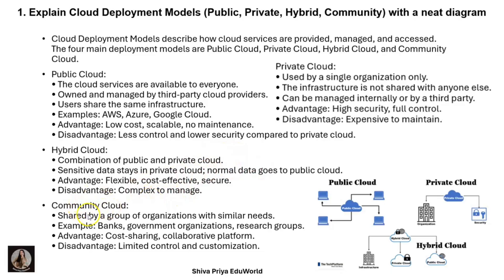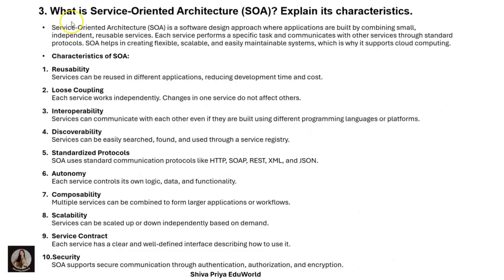Community cloud is shared by a group of organizations with similar needs. For example, banks, government organizations, and research groups. Advantages are cost sharing and a collaborative platform. Disadvantages are limited control and customization. In a diagram: public cloud — anyone can access it; private — only authorized persons for an organization; hybrid — has both public and private.